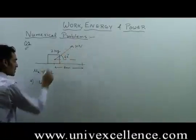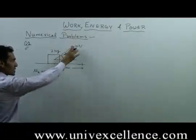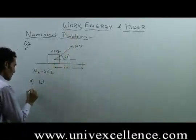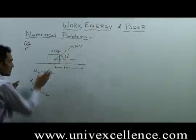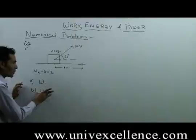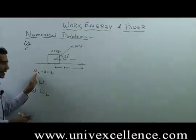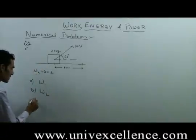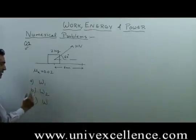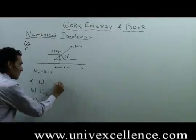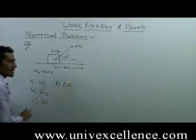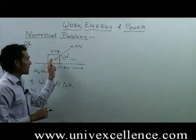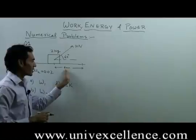Work done by this applied force — let's call this work done 1. We also have to calculate work done 2, which is the work done by kinetic friction. Then we have to calculate the total work done, and also the change in kinetic energy of the block after moving through 6 meters.